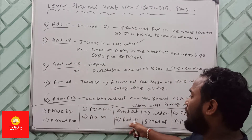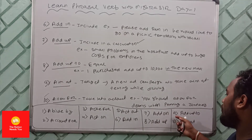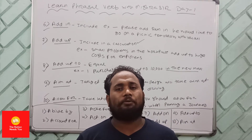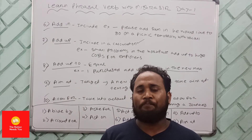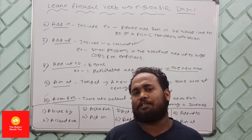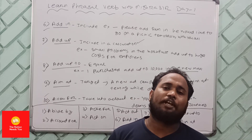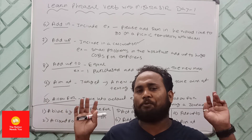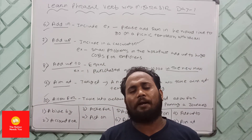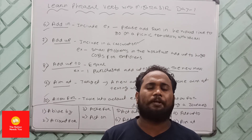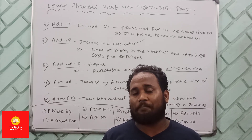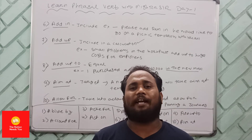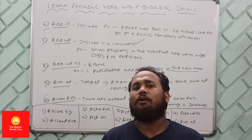So in today's class everybody learned: abide by, account for, act for, act on, act out, add in, add on, add up to, aim at, and allow for. I request everybody to use these phrasal verbs while talking with people. If you aim at speaking better English, you have to add on all these phrasal verbs. And if you abide by my rules, obviously you are going to see miracles in a short period of time. Thank you so much for watching.